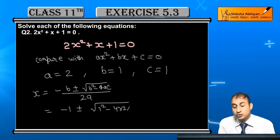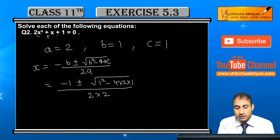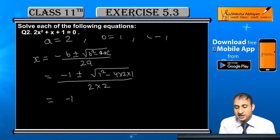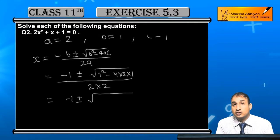Now this will be minus 1 plus or minus square root of—1 square is 1, and 4 times 2 times 1 is 8, so 1 minus 8 is minus 7, all divided by 4.